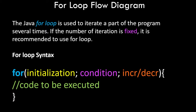Coming back to the theoretical part, let me read out a definition on what the Java for loop is. The Java for loop is used to iterate a part of the program several times. If the number of iterations is fixed, it is recommended to use for loop.